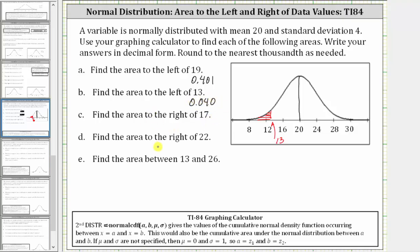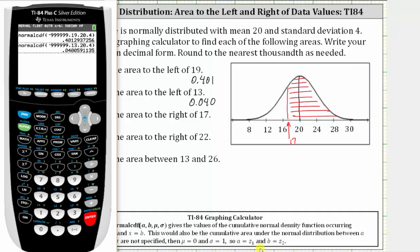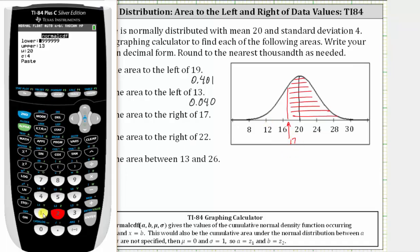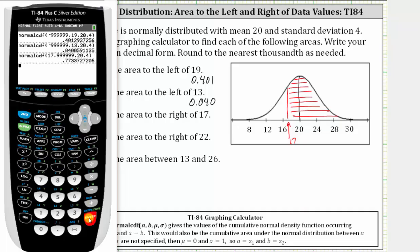For the next two examples, we want the area to the right. For part C, we want the area to the right of 17. 17 is here on the graph, so we want the area to the right of 17, which we should recognize is going to be more than 0.5. We'll have to exaggerate the upper bound or right bound this time. Going back to the calculator, second vars number two. The lower bound is now the data value of 17, so we press 17, enter. We need to exaggerate the right bound, so we press 999999, enter. Mu and sigma stay the same, go down to paste, press enter and enter. The area to the right of 17 is approximately 0.773.